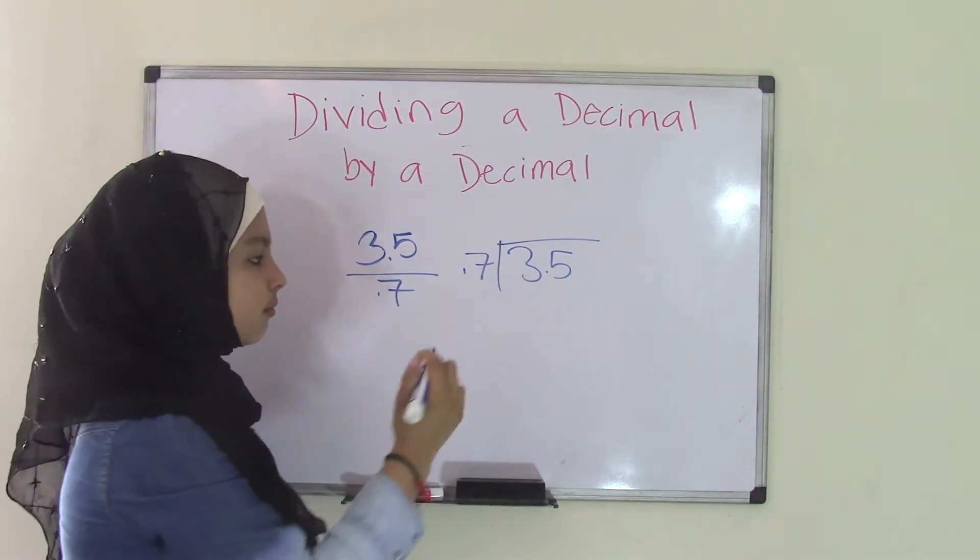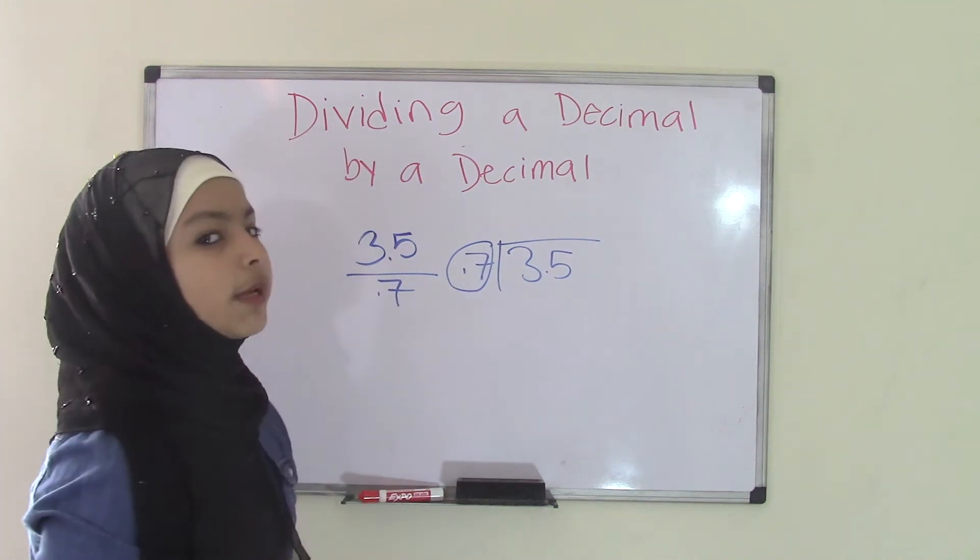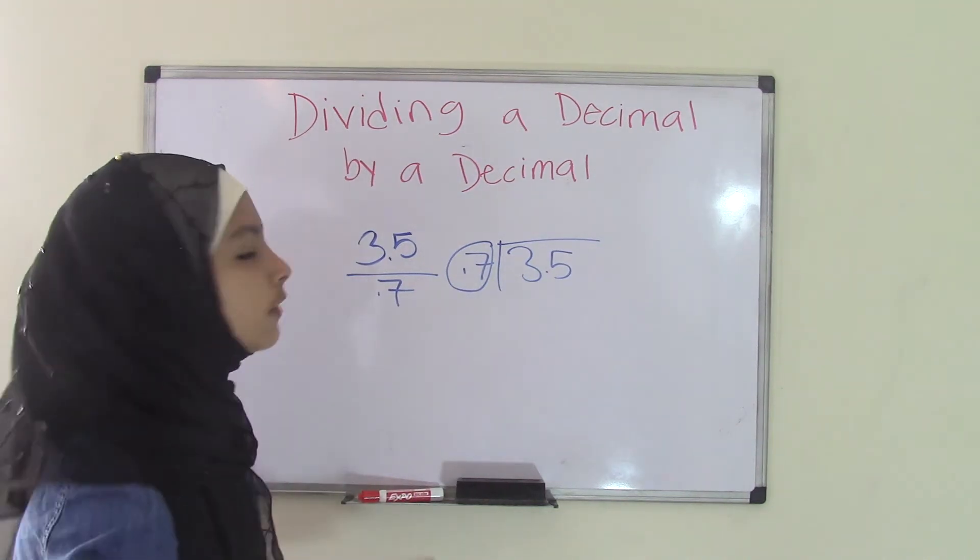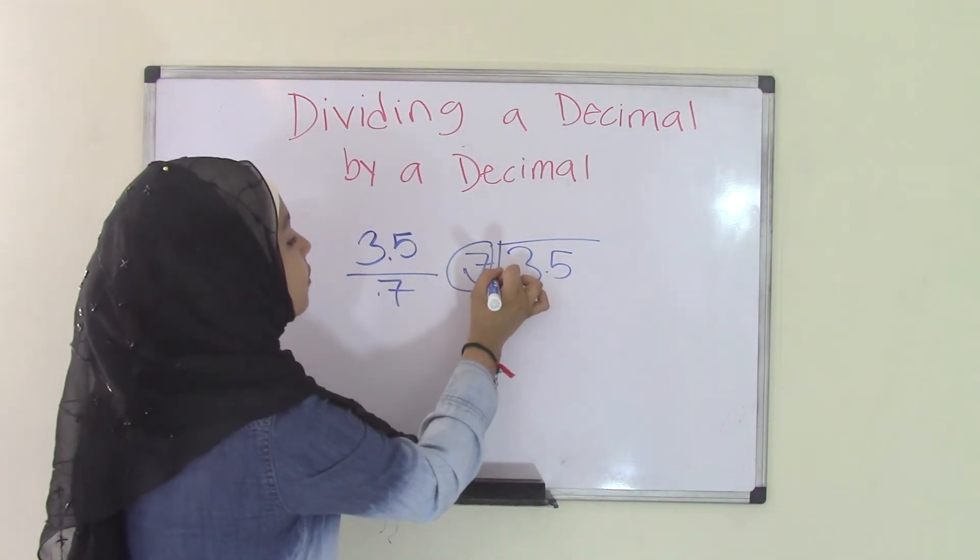Your goal is to make your divisor, which is the 0.7, a whole number. So what can you do to make that a whole number? Well you can move the decimal point. So you take that decimal point and move it one space to make it a 7.